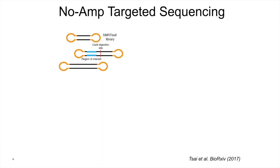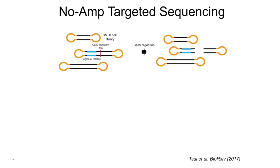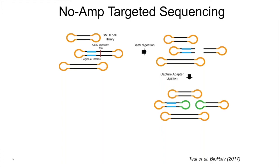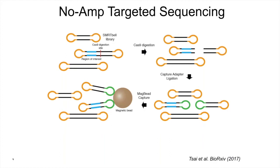What you do is design a guide RNA flanking this region. You can then use this guide RNA to get the Cas9 to bind there and cut these molecules. You then ligate adapters that are different — these are green adapters — and use sequences in these adapters to capture them by a magnetic bead, getting enrichment of molecules containing this target of interest. Finally, you perform sequencing on a PacBio instrument. As you can see, there is no PCR involved in this whole process.